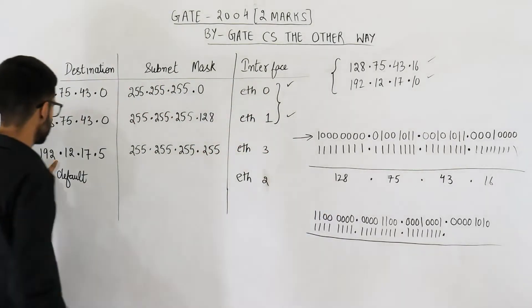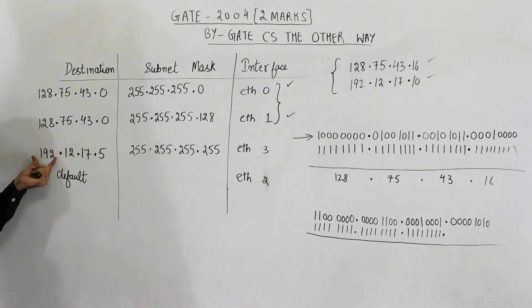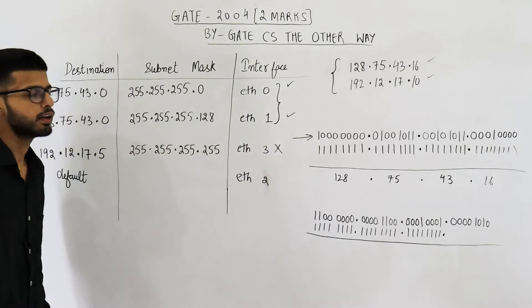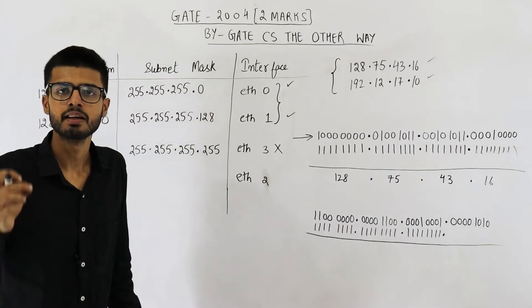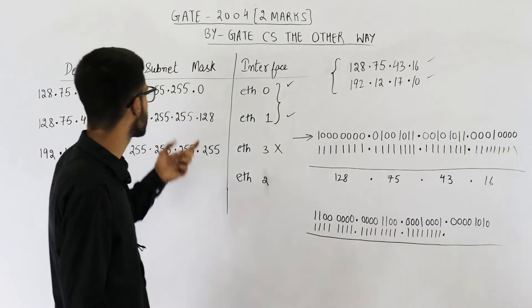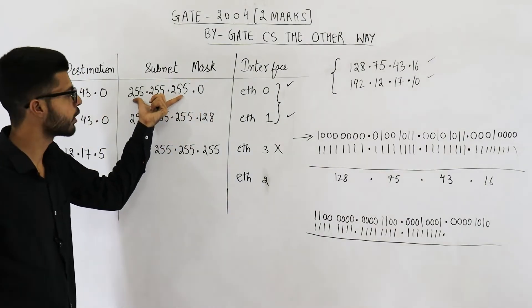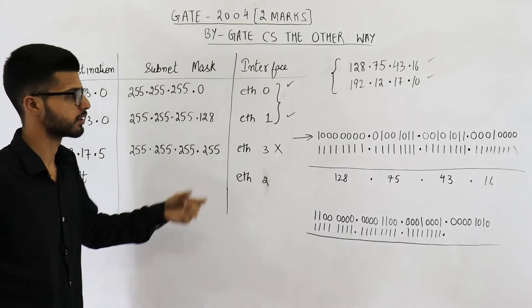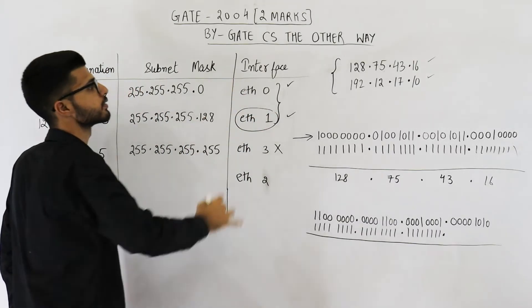See, 128 does not match with 192. So we will not forward it here. Now out of these two, which one will be selected. The network whose subnet mask has highest number of ones. Here you have 8 into 3, 24 ones. Here you have 24 plus 1, 25 ones. That means this one will be the answer.